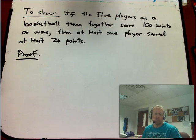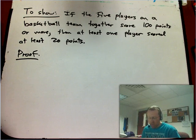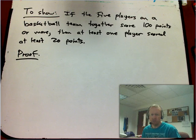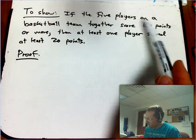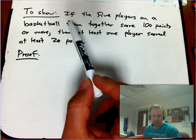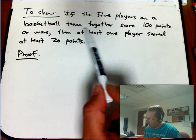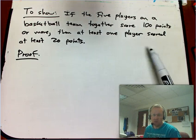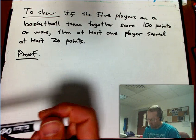Here's a real short proof by contradiction. I'm trying to think about something that's a little more real-world applicable, a little more obviously relevant in a simple situation. So if the five players on a basketball team — just exactly five players, no bench — together score 100 points or more, then at least one player scored at least 20 points.